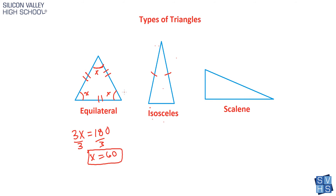Isosceles triangles are a little different, but there is something you can assume about them. Anytime you have an isosceles triangle where two sides are congruent, the base angles — the angles that those sides form — are also congruent. So two congruent sides means two congruent base angles. As for scalene, if no sides are the same, then no angles are the same either. To summarize: two sides the same means two angles the same; three sides the same means three angles the same; no sides the same means no angles the same.